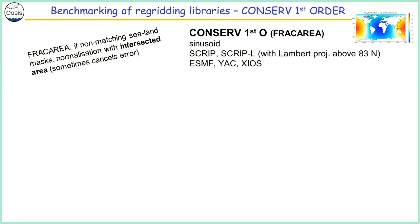This is exactly the type of thing that comes out of a benchmarking exercise: you see when things are different and then you analyze at a deeper level of detail and see if there are problems or not. For the conservative methods, you have two ways of normalizing the weights: either you normalize with the intersected area, which is what we call the fracarea, usually used in coupled models, but it can lead to a cancellation of errors.